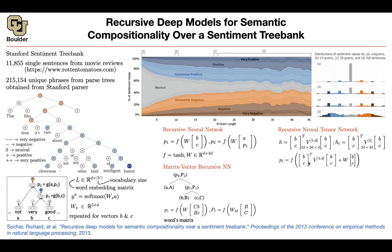The previous recursive neural network had W times BC in it — we still have that. So RNTN is a generalization of the previous model: if you set V to zero, you go back to the original model. But now you have pairwise interaction between words B and C through this dot product and tensor. That's why it's called a tensor network — because V is a tensor. V is also independent of the size of your vocabulary — it's always 2D by 2D by D, where D is your choice. This gives fewer parameters while still providing pairwise interaction.